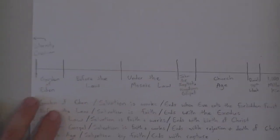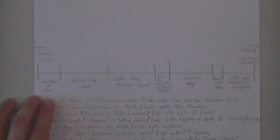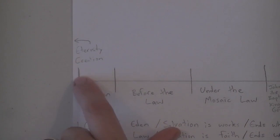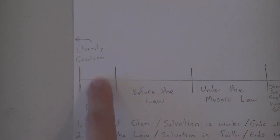Now we're going to get into what I teach: I believe that there are seven different dispensations. The brethren can fight back and forth on the timing of when this happened, but we're not going to get into all that. I made a little chart to show what I'm talking about. It starts with eternity, then God creates the world. You have the Garden of Eden as the first dispensation, then before the law, Abraham, Isaac, Jacob, then under the Mosaic law.